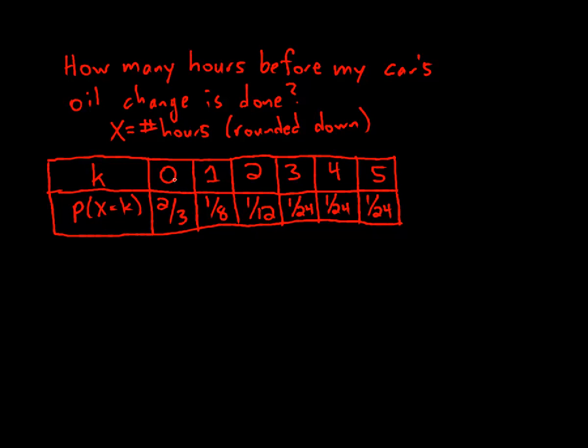I have that my possible values for k is 0, 1, 2, 3, 4, and 5. And then the corresponding probabilities are given here.